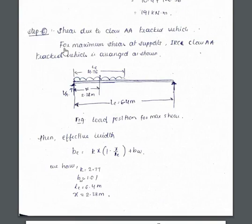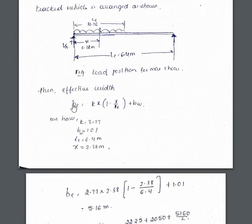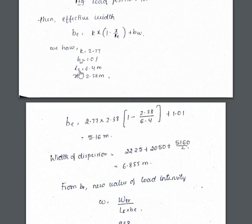Next step is about shear due to class AA tracked vehicle. For maximum shear at supports, IRC class AA tracked vehicle is arranged as shown in the figure. In order to get maximum shear force at one support, we are placing it near to the support maintaining the clearance. So what happens, effective width will change because all the parameters, the K value, BW value, effective length value, all are same, but only X will change. The vehicle is not placed at the center initially, so we have to take the center of gravity distance from the support. Center of gravity of the load from the support, it is load from here to here, 4.76 from the support you have to take by 2, 2.38. X value differs, so B value again differs.